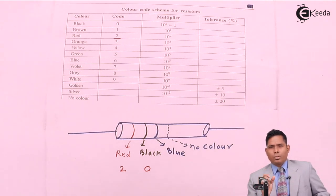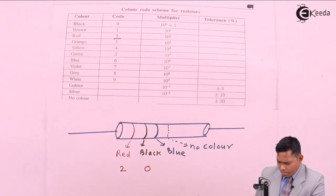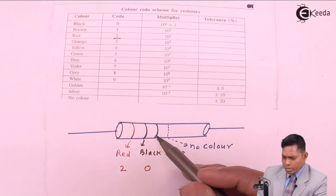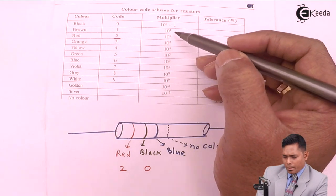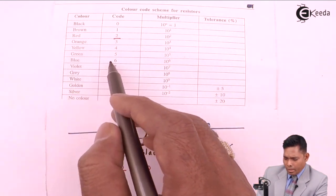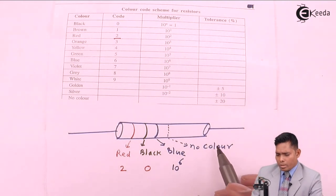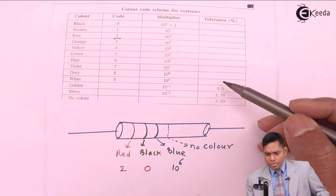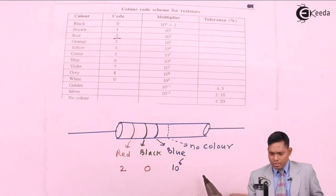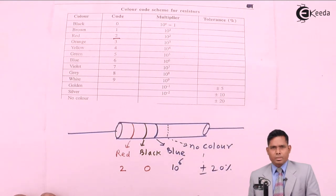Tolerance is basically the error or the mistake the manufacturer can make in the production of a particular value of the resistance. Blue has to be seen in the multiplier, which is 10^6. And no color, the fourth one is the tolerance, which is 20%, so this is plus minus 20%.